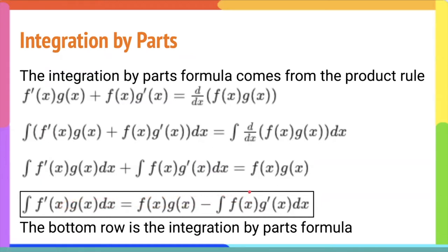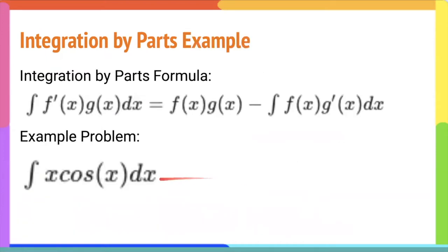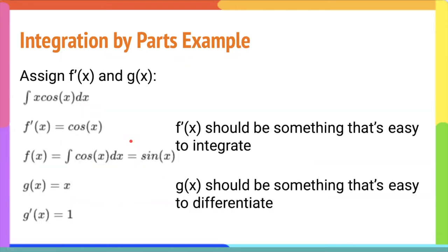How do we use this formula? Here's an example: the integral of x·cos(x) dx. First, assign f′(x) and g(x). f′(x) should be something easy to integrate — cosine x is easy to integrate and differentiate, so it can be either. g(x) should be something easy to differentiate, so we set g(x) = x. Differentiating x gives 1, whereas integrating it gives x²/2, which makes things more complicated.